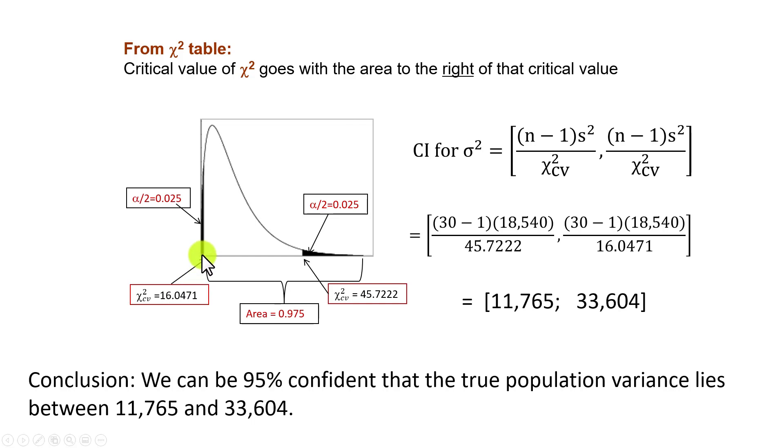How do we get that? On the chi-square table, we're going to be looking for that chi-square value that corresponds to the area of 0.975 to the right of it. Remember, if this left tail here amounts to 0.025, then everything else to the right of it would be 0.975.